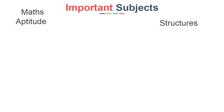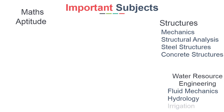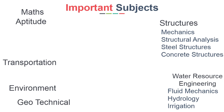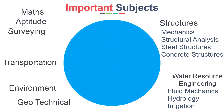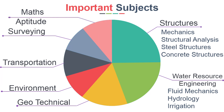You have to study these subjects very thoroughly: Maths, Aptitude, Structures (which includes Mechanics, Structural Analysis, Steel Structures, Concrete Structures), Water Resource Engineering (which includes Fluid Mechanics, Hydrology, and Irrigation), and apart from these, Geotechnical, Environmental, Transportation, and Surveying. Based on your understanding, you can pick any subject first, but you should prepare all these subjects over the next 9 months. Assuming the complete time is 100%, ideally give 25% to Structures, 20% to Water Resource Engineering, 15% to Geotechnical, 10% each to Environmental, Transportation, and Survey, and the remaining 10% to Maths and Aptitude combined.